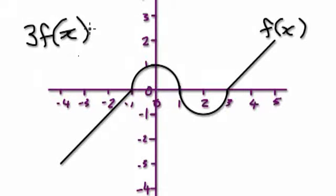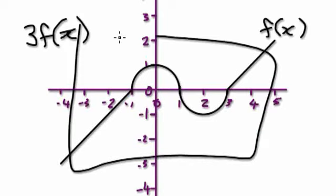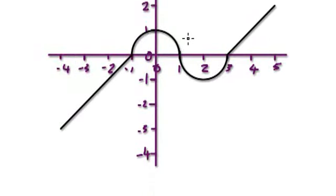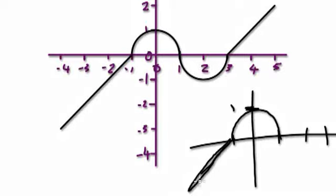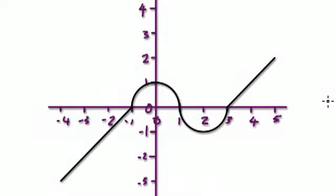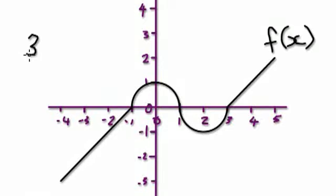So Ruffy sketches this graph here — it doesn't have to be all neat and perfect, you can just do something like this. Let's say 1 here, and then this has a gradient of 1, and then this is another semicircle here, and so on. It doesn't have to be perfect. But given that this function here is f of x, I want to know what the graph of 3f of x would look like.